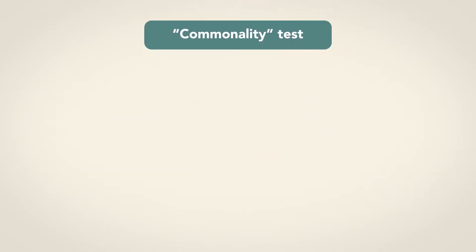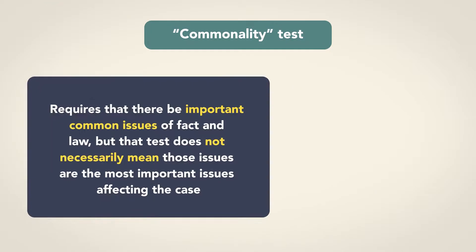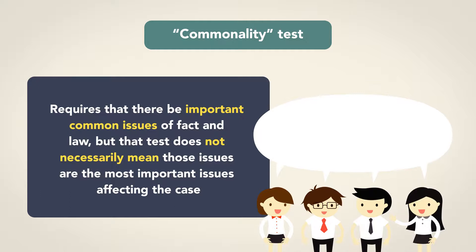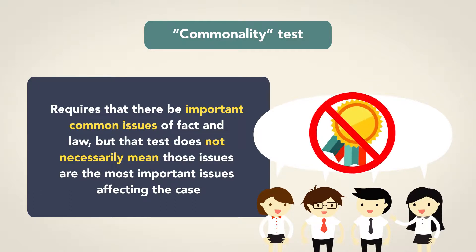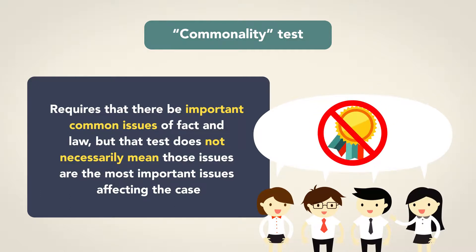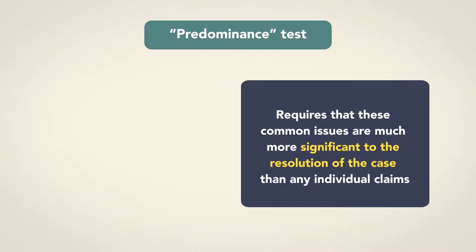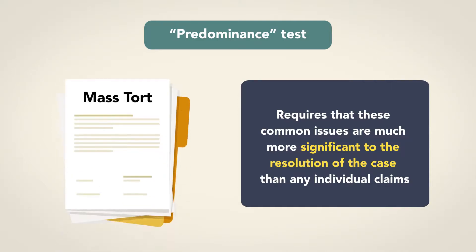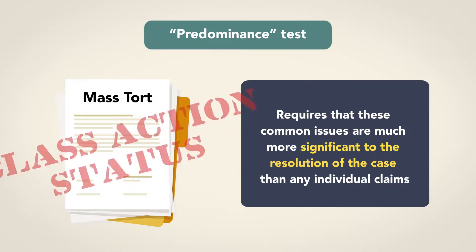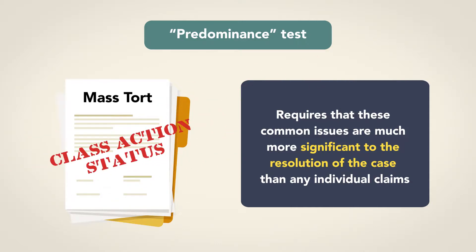The commonality test requires that there be important common issues of fact and law, but that test does not necessarily mean those issues are the most important issues affecting the case. The predominance test, however, requires that these common issues are much more significant to the resolution of the case than any individual claims. It is on this predominance that mass tort class action status usually turns.